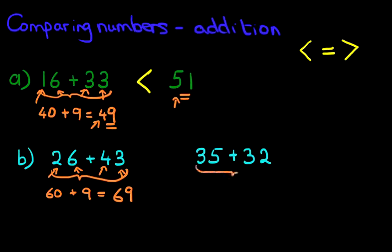What about on this side? Well, how many tens are there? We've got three and another three. So three plus three is six. That becomes 60. Plus, how many units are there? Well, we've got five plus two. Five plus two is seven. So that becomes 67. So we are now comparing number 69 and number 67.